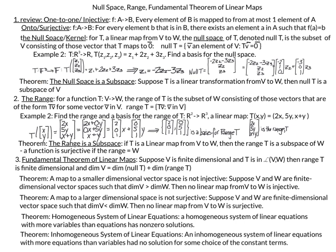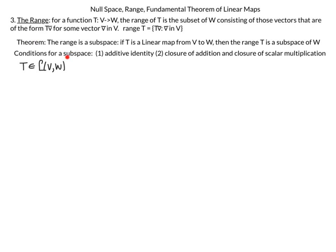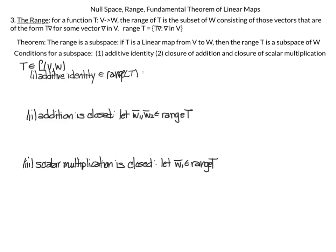The theorem that the null space is a subspace says: if T is a linear transformation from V to W, then null(T) is a subspace of V. Similarly, the range is a subspace: if T is a linear map from V to W, then the range of T is a subspace of W. To show this, we need to prove three things: the additive identity is in the range, addition is closed, and scalar multiplication is closed.